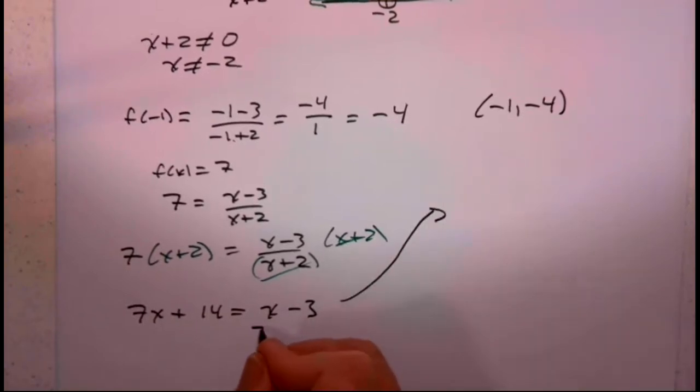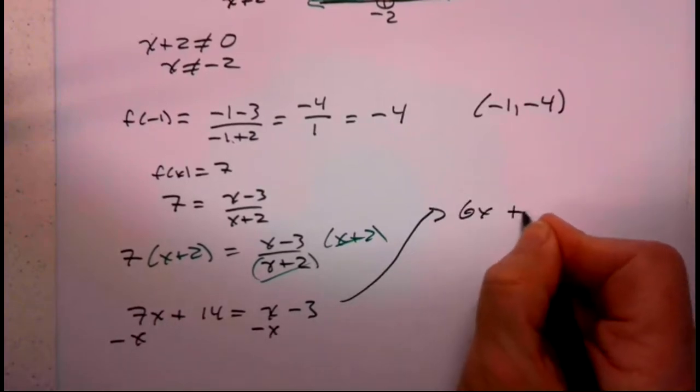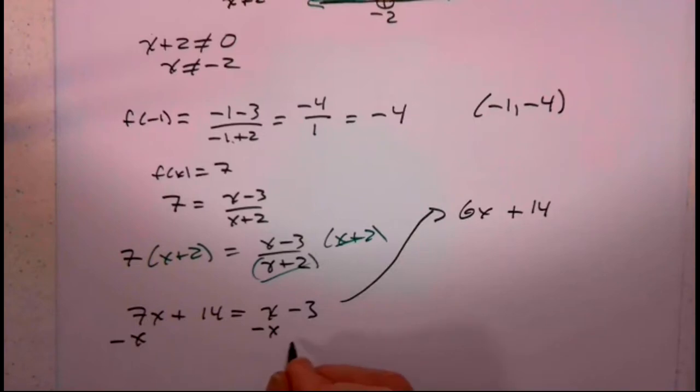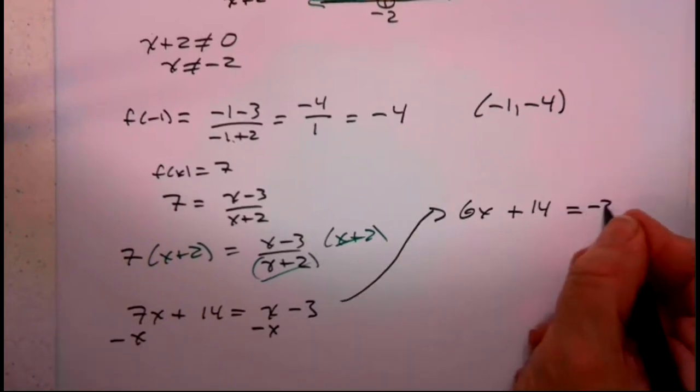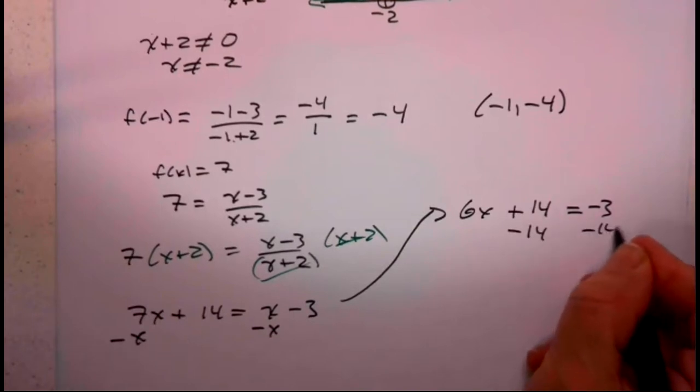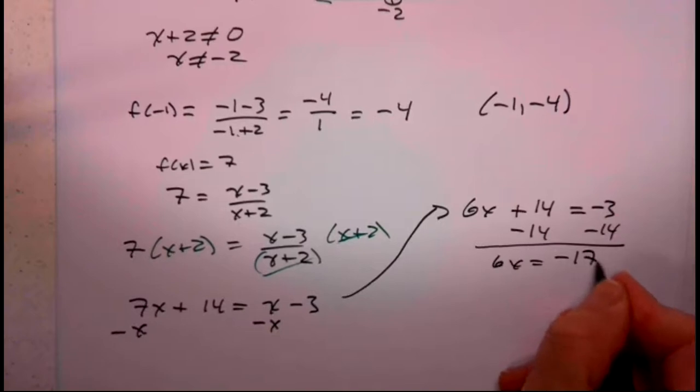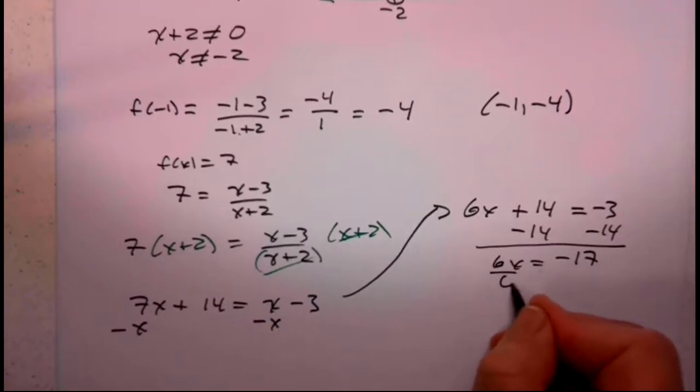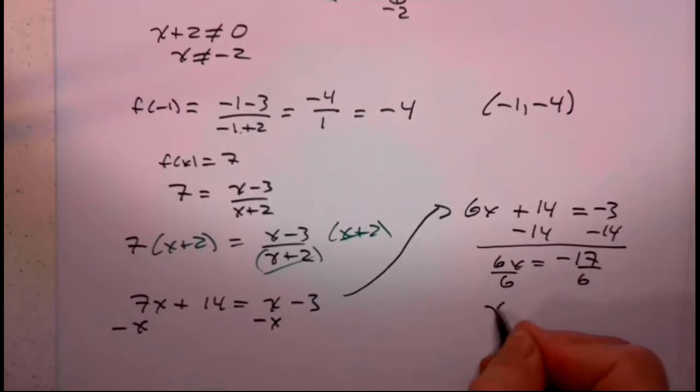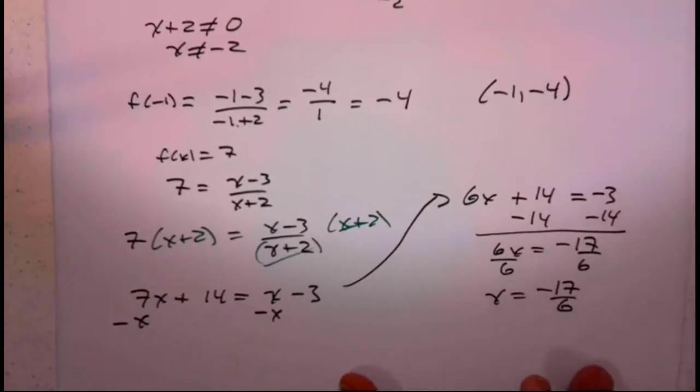So we'll subtract x, 1x from both sides, 7x minus 1x, 6x plus 14 equals negative 3. Then we'll subtract 14 from both sides. 6x is negative 17. And then we divide by 6.